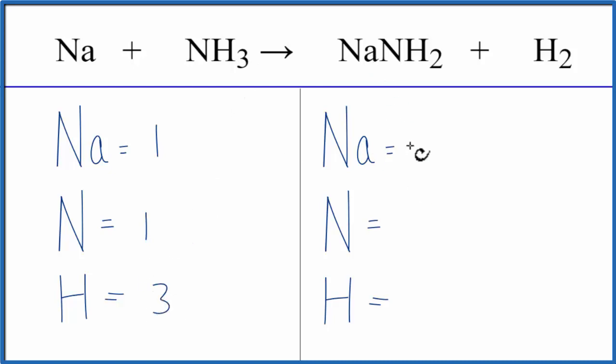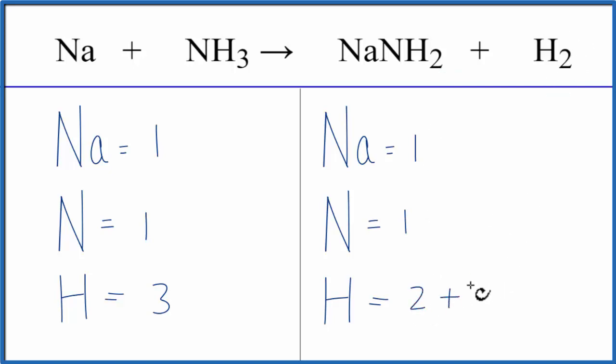On the product side, one sodium, one nitrogen, and then two hydrogens, plus we have these two here. So we have a total of four hydrogen atoms.